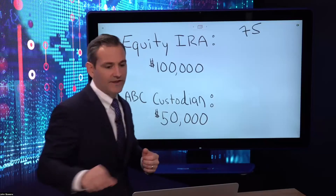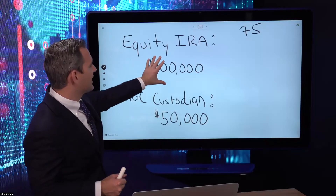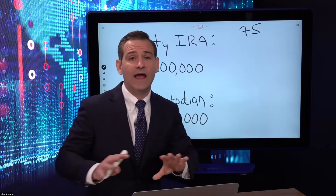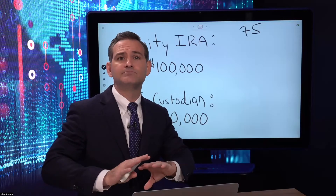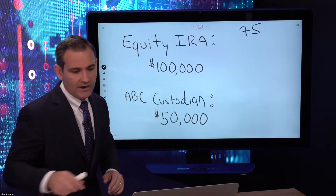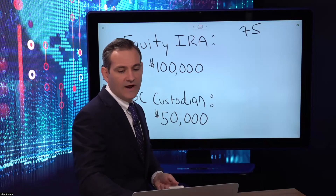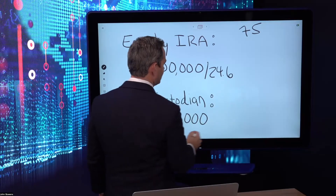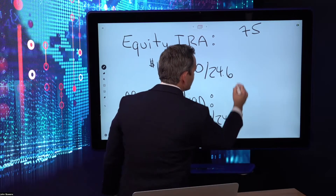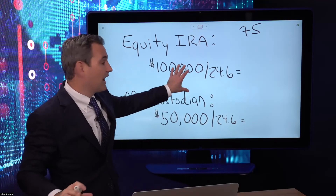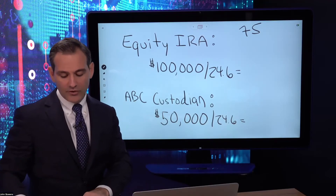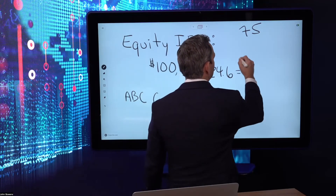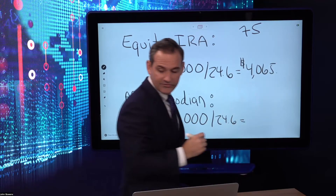So let's perform the calculation. John Smith is 75 years old, with $100,000 in his Equity Trust IRA—mostly real estate, gold and silver, and private stock—and $50,000 in an IRA elsewhere. Going back to our divisor of 24.6: $100,000 divided by 24.6 equals $4,065.04.